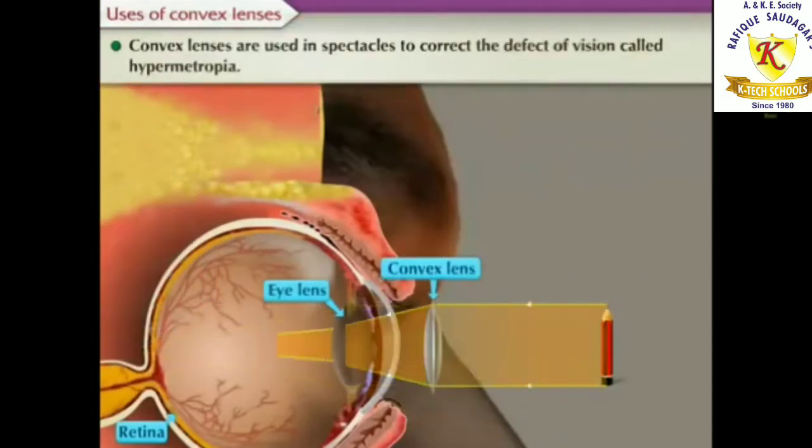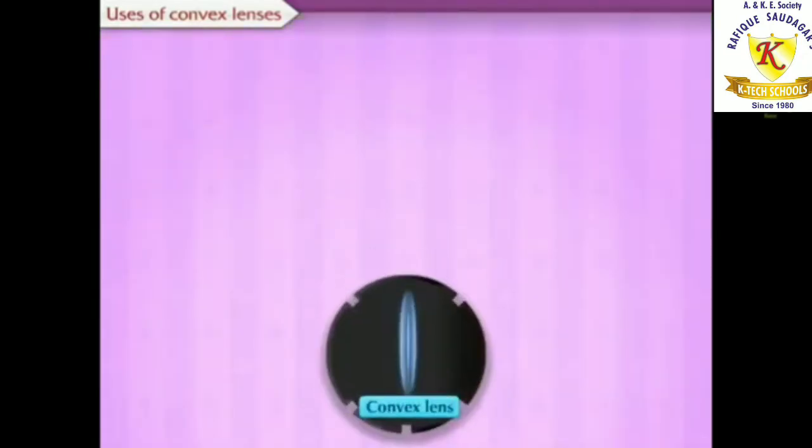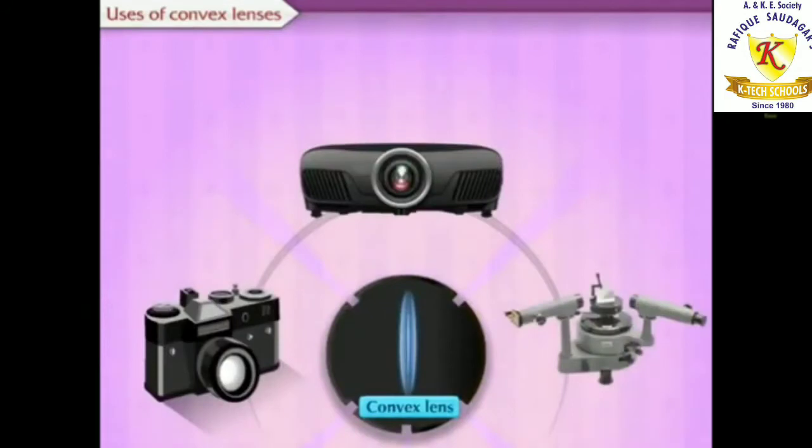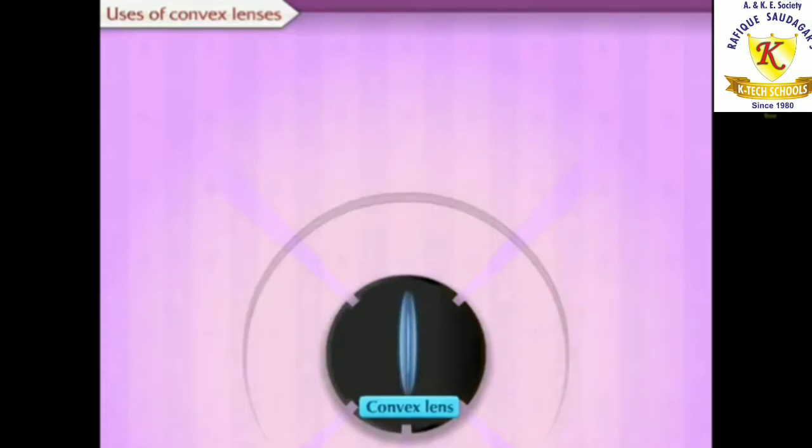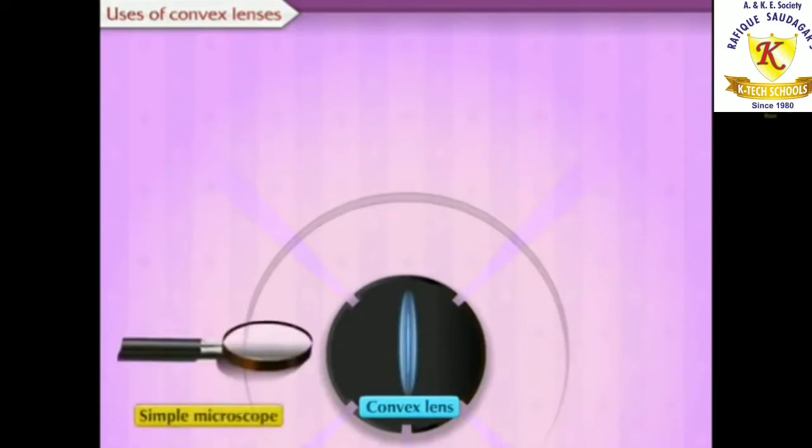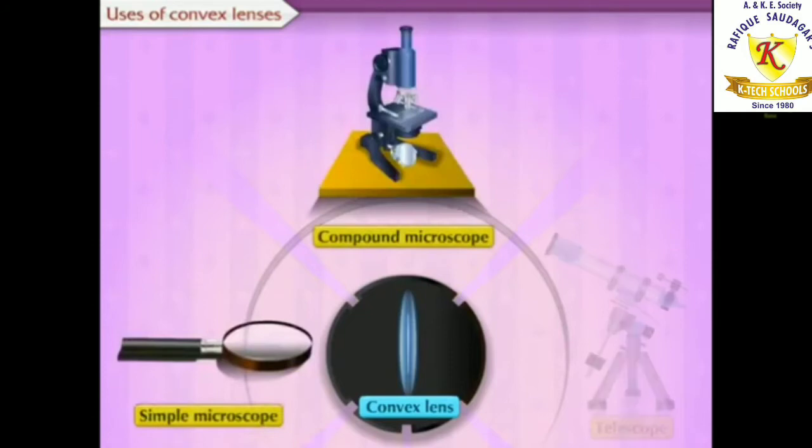Convex lenses are used in spectacles to correct the defect of vision called hypermetropia. Convex lenses are used in instruments like camera, projector, spectrometer. Convex lenses are also used in simple microscope, compound microscope, and telescope.